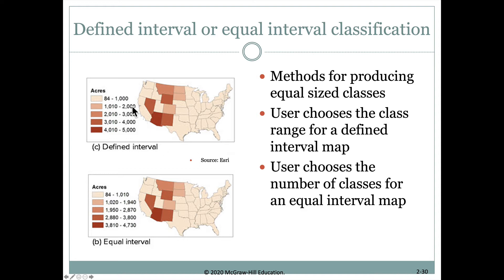We can also define our own intervals if we want to — for example, this one stops at the thousands from 84 up to 1,000, then between 1,000 and 2,000, and so forth — and we get a map that looks like this.